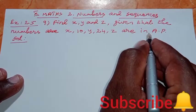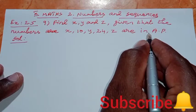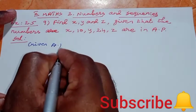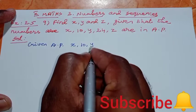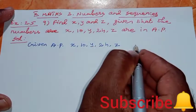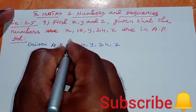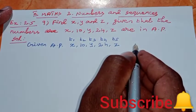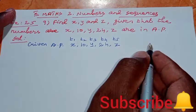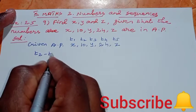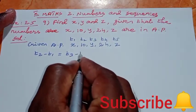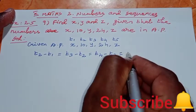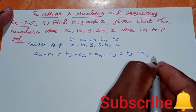In AP, the common difference is equal. So for the given AP, the common difference means: second term minus first term equals third term minus second term equals fourth term minus third term equals fifth term minus fourth term. This is the concept we use to find the values.